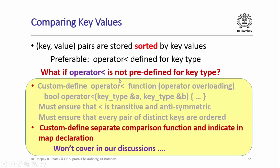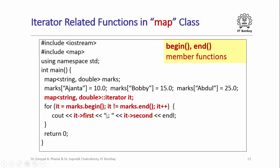You could also define separate custom comparison functions rather than overloading operator less-than, and include the definition in the map declaration, but we will not cover this here. We will just say it is preferable to use the less-than operator, and if it is not already defined for the key type it is a good idea to define it explicitly. Now we have already studied about iterators; the map class also supports iterators. It has 'begin' and 'end' member functions.